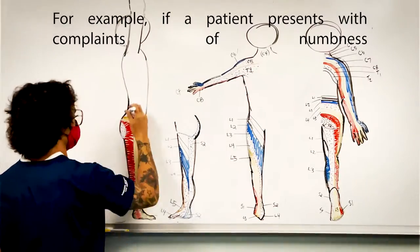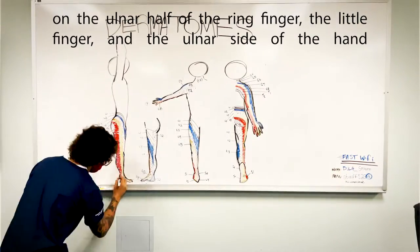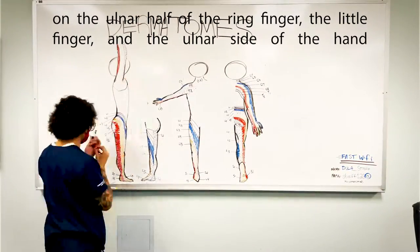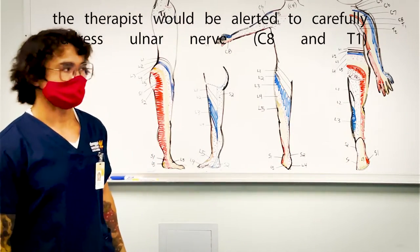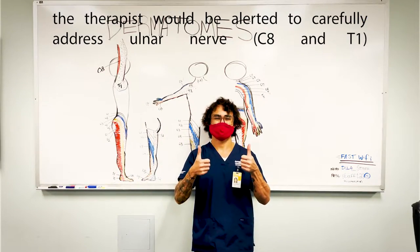For example, if a patient presents with complaints of numbness on the ulnar half of the ring finger, the little finger, and the ulnar side of the hand, the therapist would be alerted to carefully address the ulnar nerves C8 and T1.